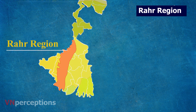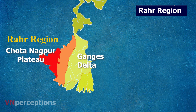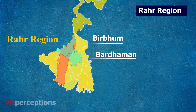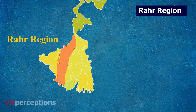The Rarh region lies between the Chhota Nagpur plateau on the west and the Ganges delta on the east. This region constitutes the districts of Birbhum, Bardhaman, Bankura, Murshidabad and Medinipur. This region is believed to be created from soil from the Deccan plateau and is dominated by laterite soil.